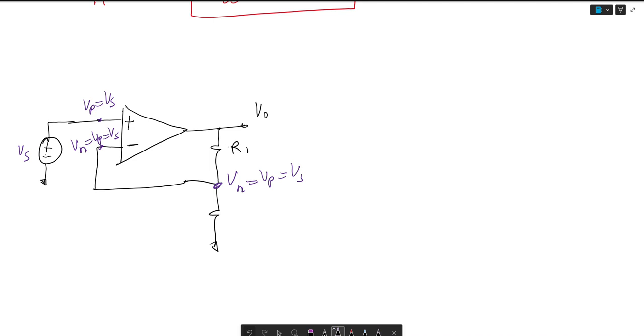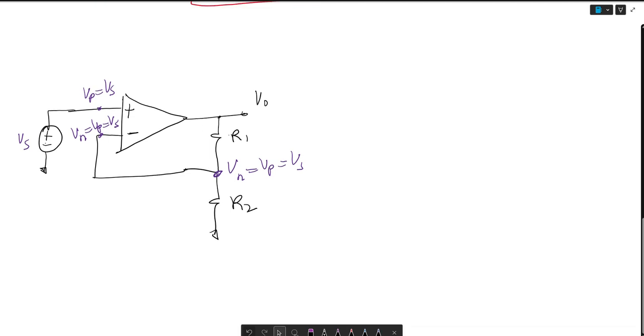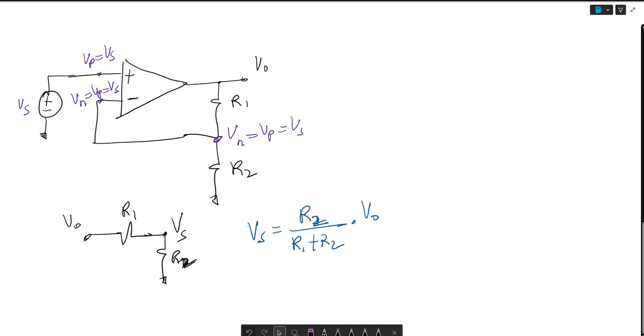If I have a resistor here R1 and another resistor here R2, if you were to consider a voltage divider equation, so this is Vout, R1, R2, and this here is VS, then you could write that VS equals R2 over R1 plus R2 times V0. We like to write these in terms of Vout and in terms of the gain.